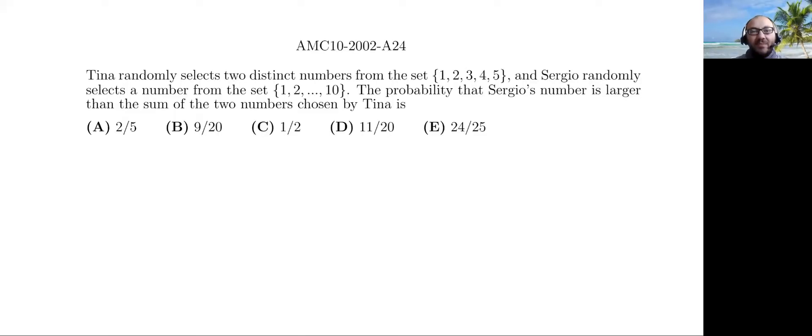All right, let's pull out the problem. It's a past AMC 10 problem. Let's read it first. Tina randomly selects two distinct numbers from the set 1 up to 5, and Sergio randomly selects a number from the set 1 up to 10. The probability that Sergio's number is larger than the sum of the two numbers chosen by Tina is what?